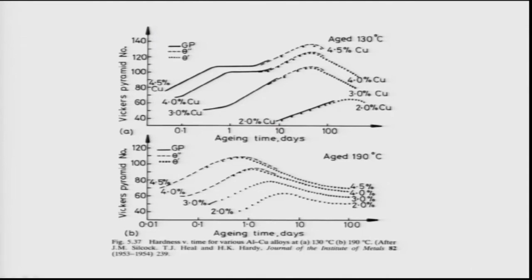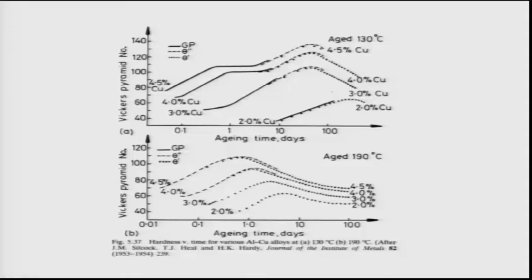That time corresponds to GP zone formation. Hardness then slowly increases, taking about 200 days to reach optimum hardness. This illustrates the problem with low aging temperatures — kinetics are very slow. Increasing copper concentration improves kinetics somewhat, but it still takes about 50 days to reach peak hardness for richer alloys.